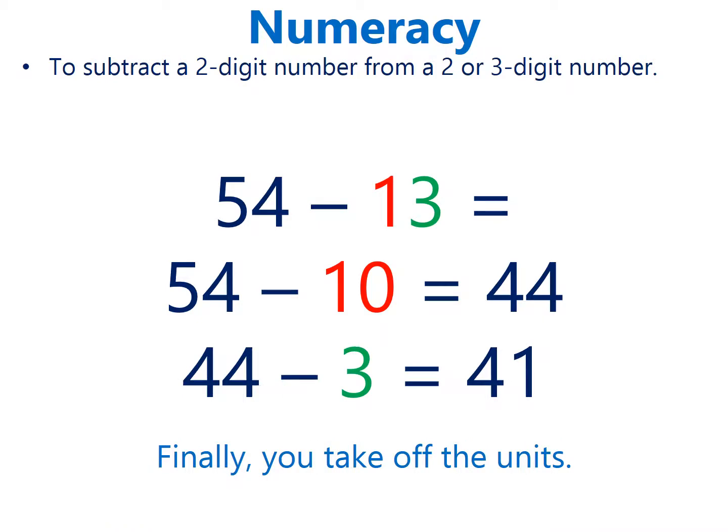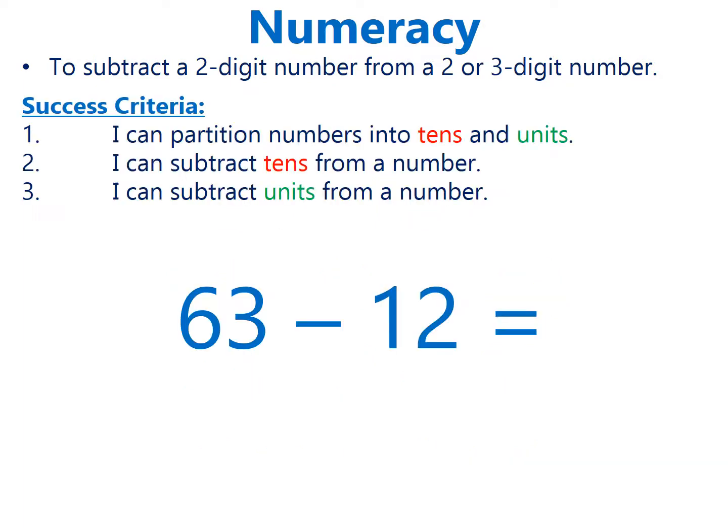Finally, you take off the units. Success criteria: Number one, I can partition numbers into tens and units. Number two, I can subtract tens from a number. Number three, I can subtract units from a number.